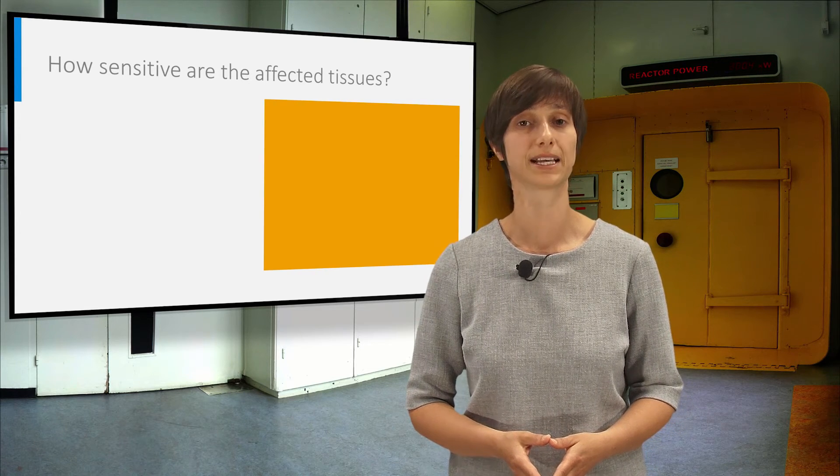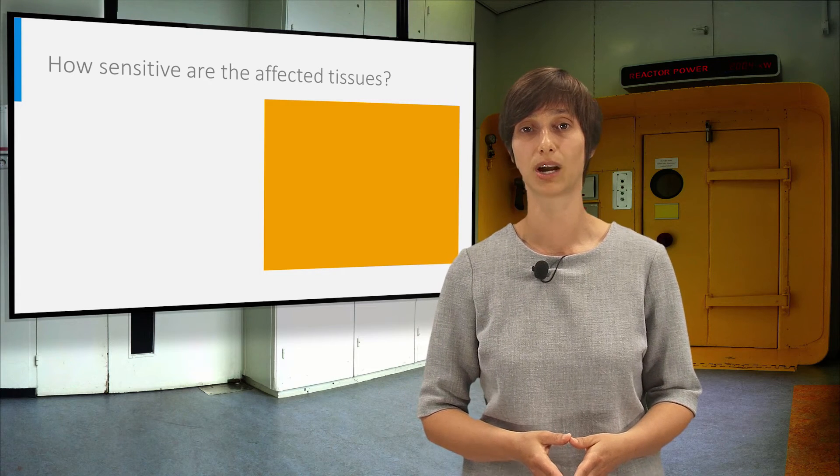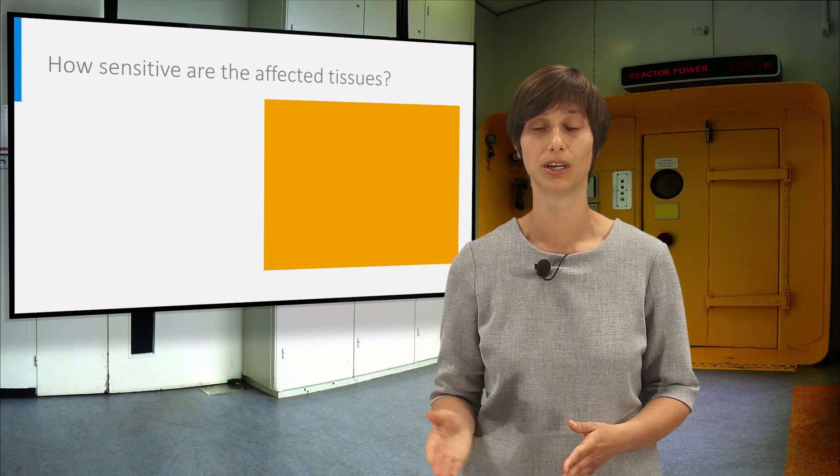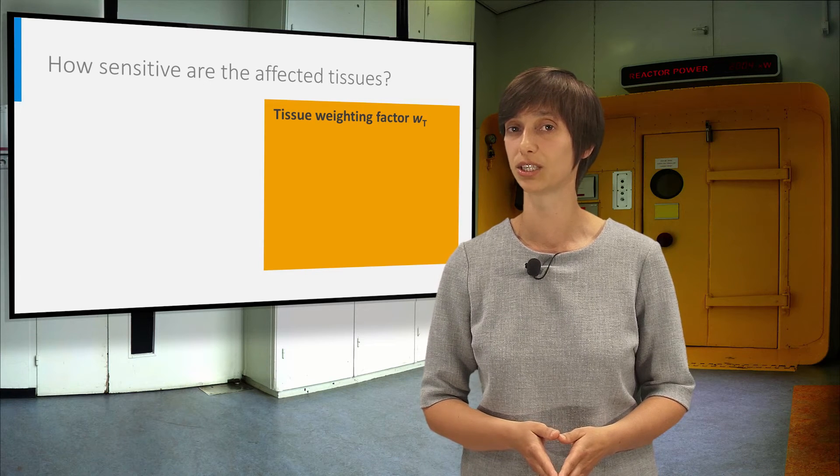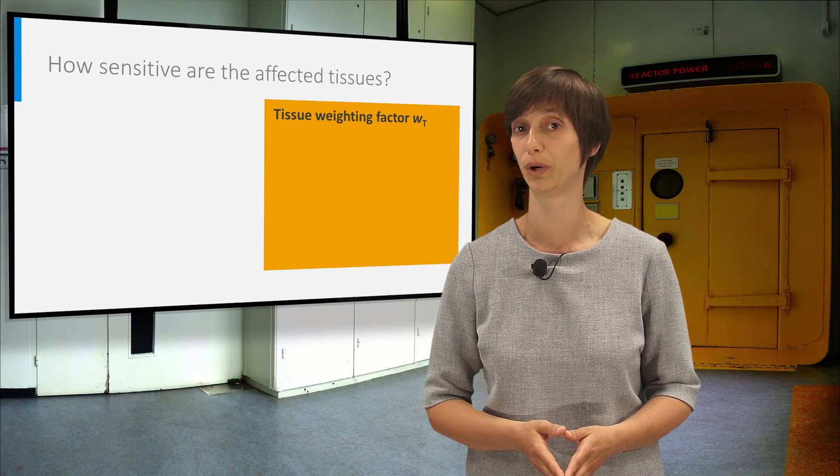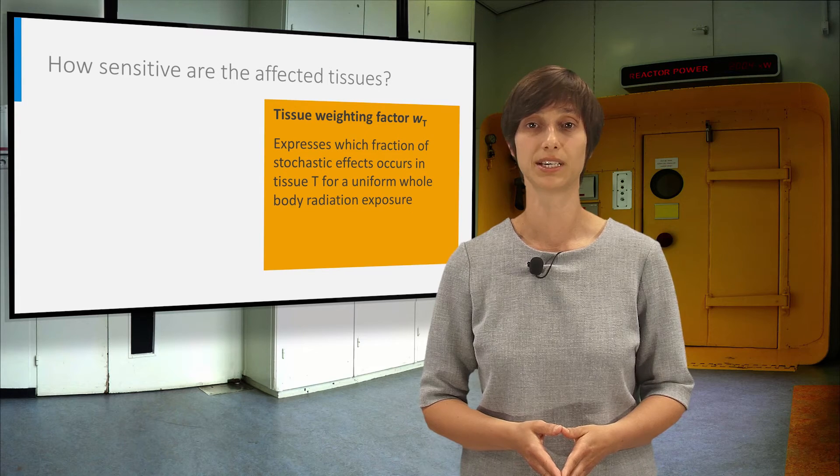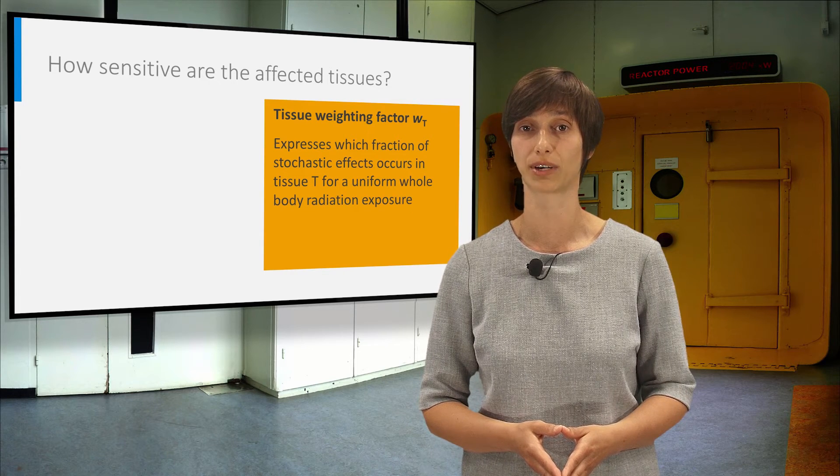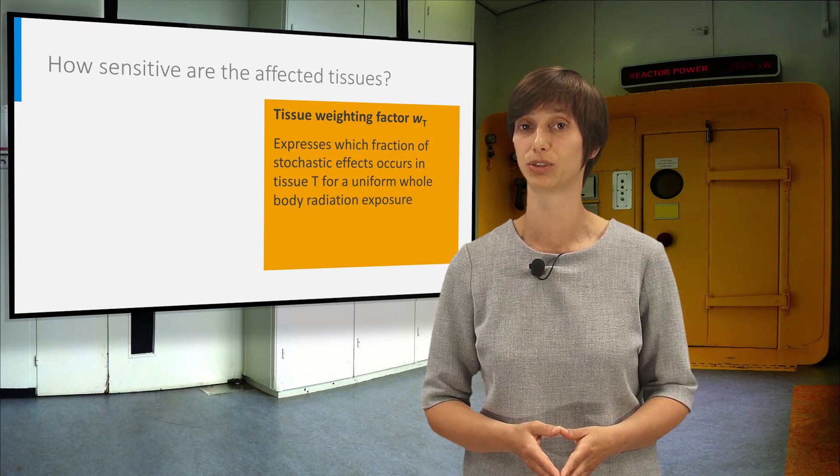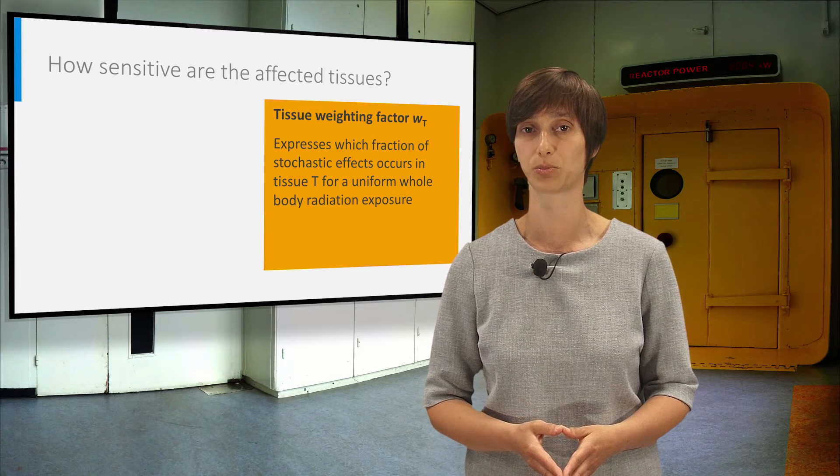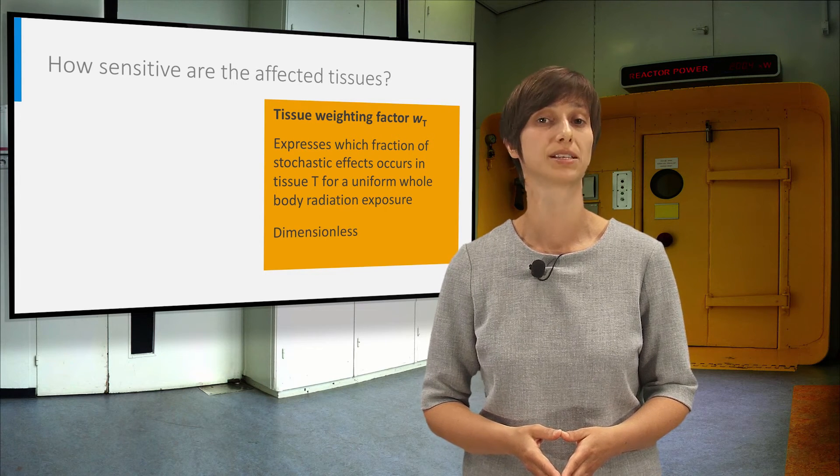Thirdly, for stochastic effects, one has to take into account the radiosensitivity of the affected tissues. The radiosensitivity of each tissue is expressed by the tissue weighing factor. This quantity expresses which fraction of the stochastic effects occurs in tissue T for a uniform whole-body radiation exposure, and is again a dimensionless number.